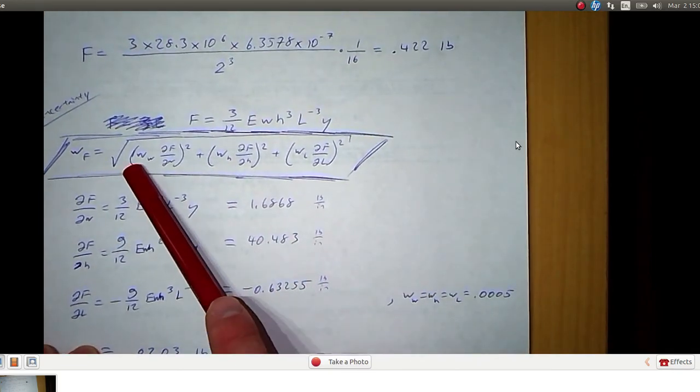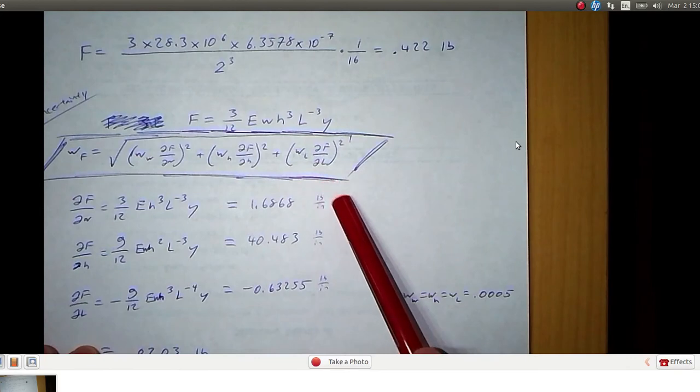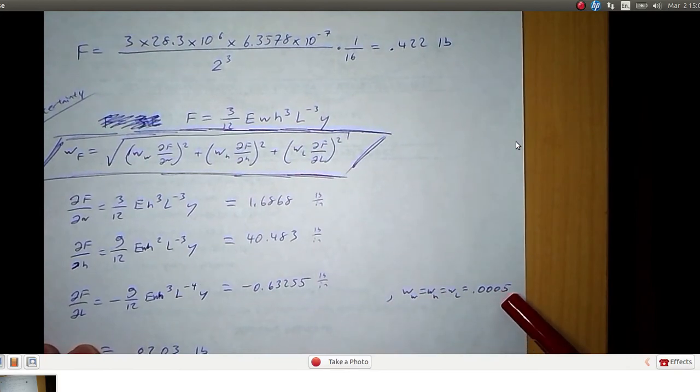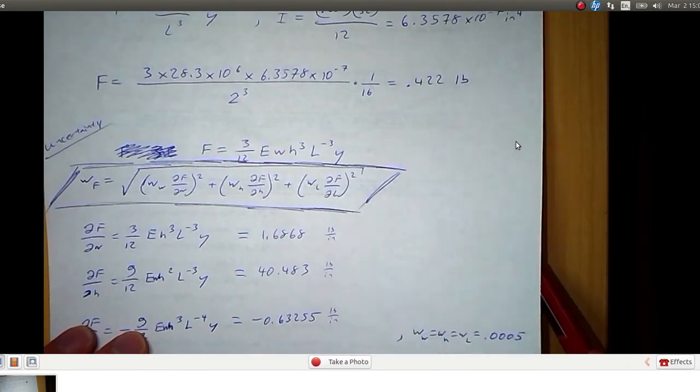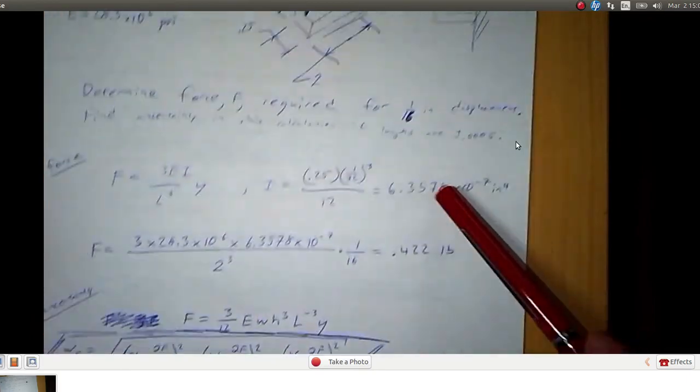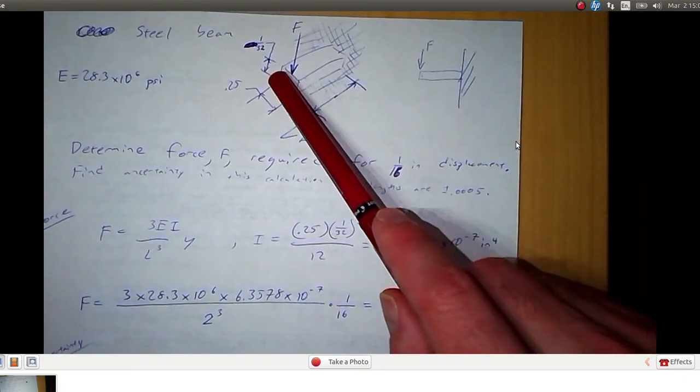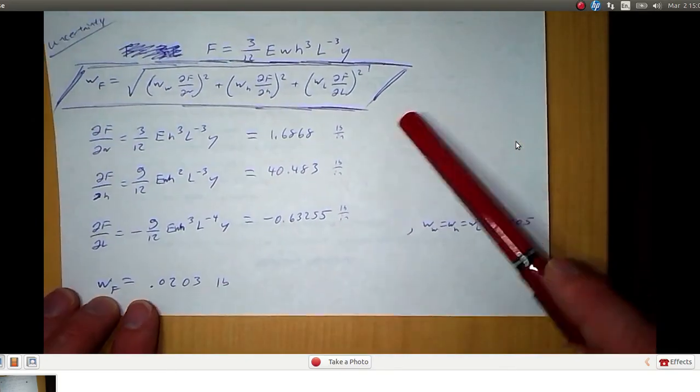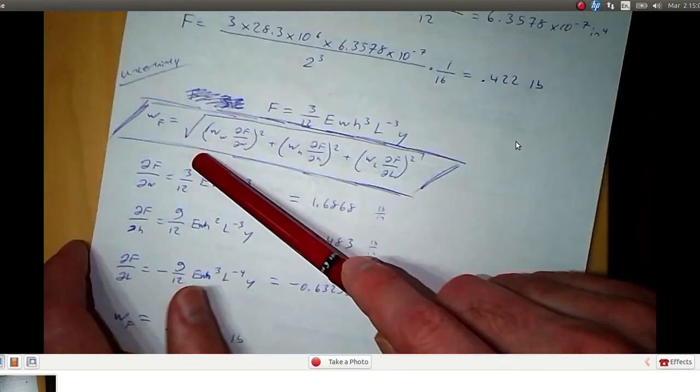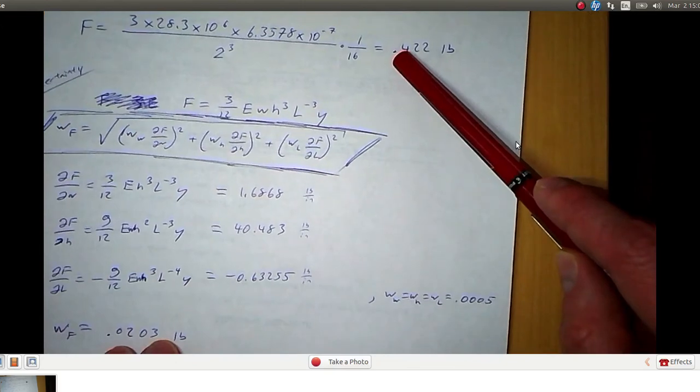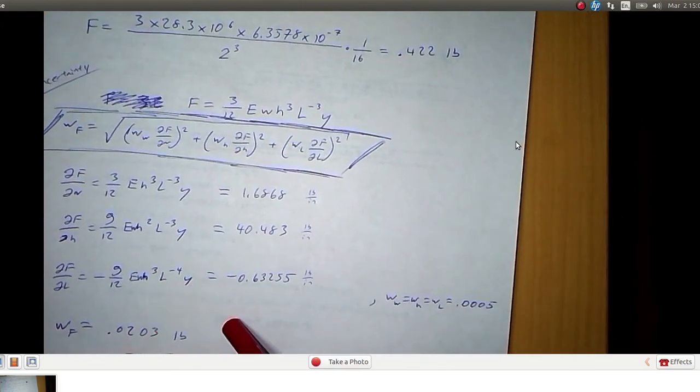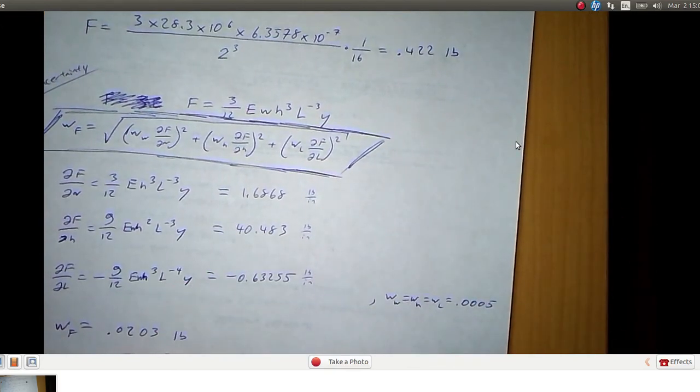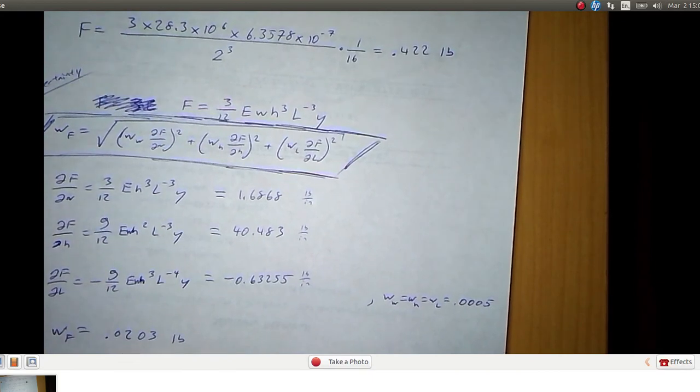Now these uncertainties, W sub W, W sub h, and W sub L, they're all the same. And they're half of a thousandth that was given in the problem statement. The measurements of the dimensions here have uncertainty of half of a thousandth. We come up with the uncertainty in this force calculation is 0.0203 pounds, which is relatively significant compared to the magnitude of the force that we calculated.